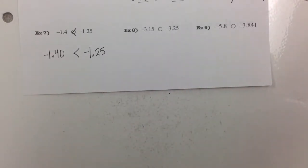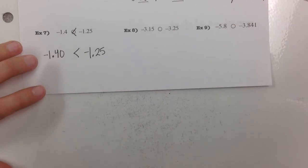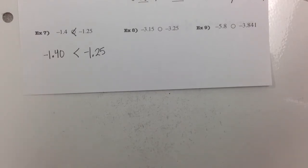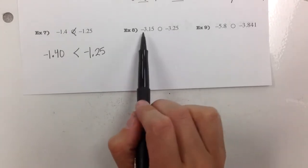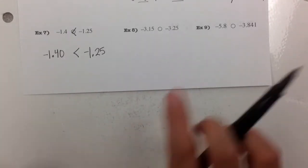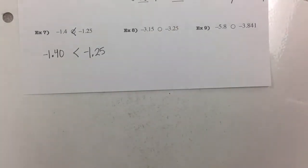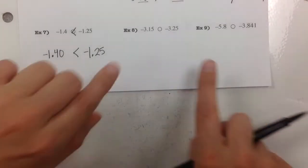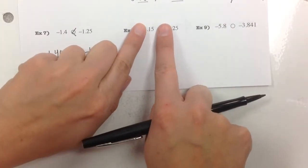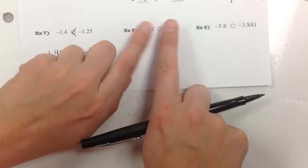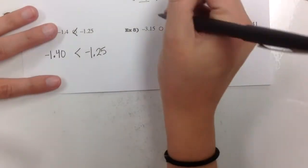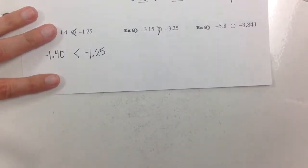Example 8: negative 3 and 15 hundredths compared to negative 3 and 25 hundredths. Both are negative, and they both have negative 3 as the whole number part, so I just look at the decimals. They have the same number of decimal places, so I don't need to rewrite. Ignoring the negatives, 15 would normally be less than 25, but with negatives it works the opposite way — it's actually greater than.